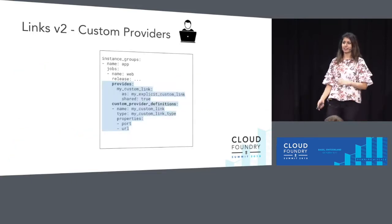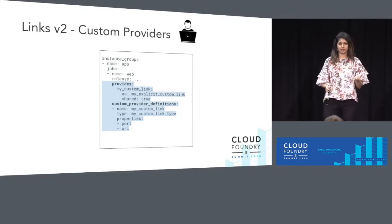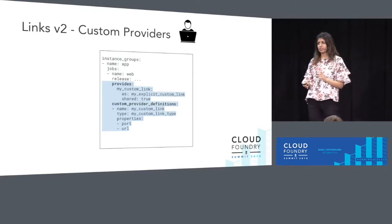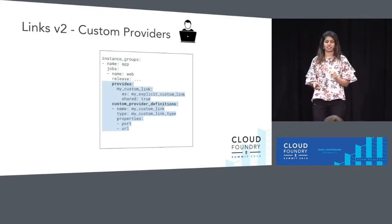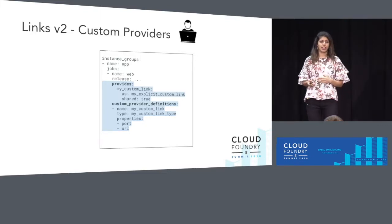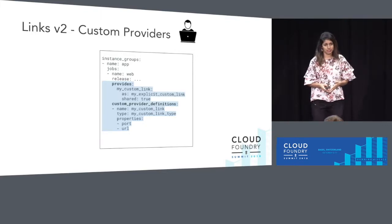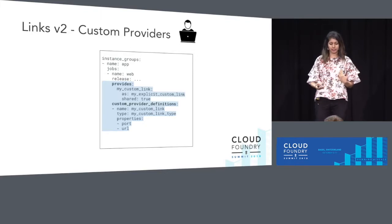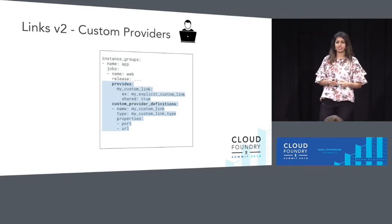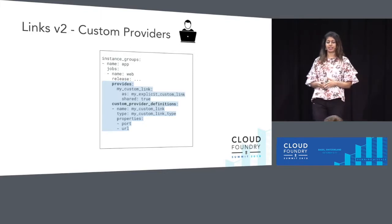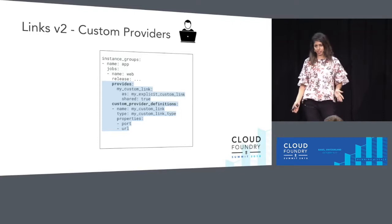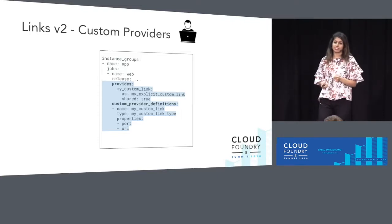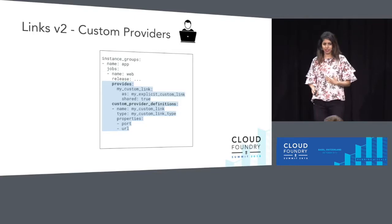We've also created custom providers. A custom provider is only different from any other provider in the sense that it only exists in the deployment manifest and not in the release spec. A custom provider can still be aliased, still expose properties, and still be shared. The only difference is that it only exists purely in your deployment manifest.